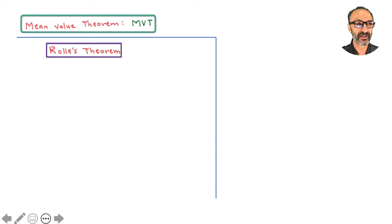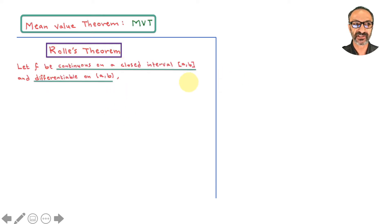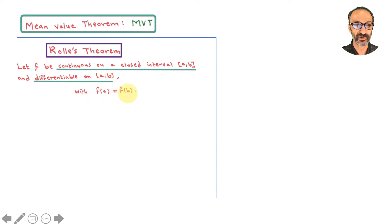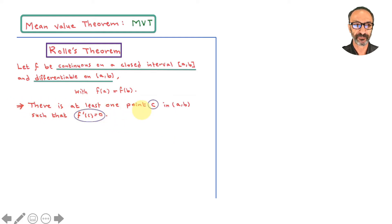Let's talk about the mean value theorem, MVT in short. To start with, we're going to talk about Rolle's theorem. Rolle's theorem says: let F be continuous on the closed interval [A,B] and differentiable on the open interval (A,B) with F(A) equal to F(B). Then there is at least one point C in the open interval (A,B) such that F'(C) equals 0, which means we have a horizontal tangent somewhere.